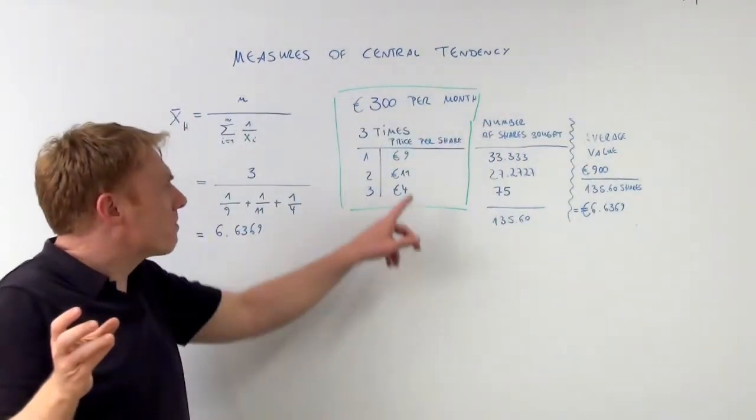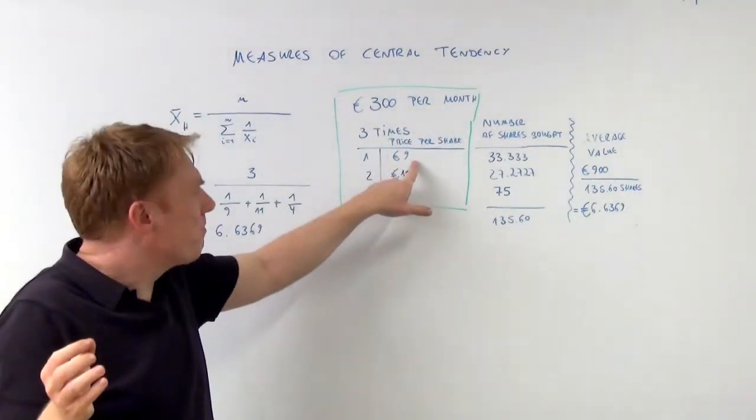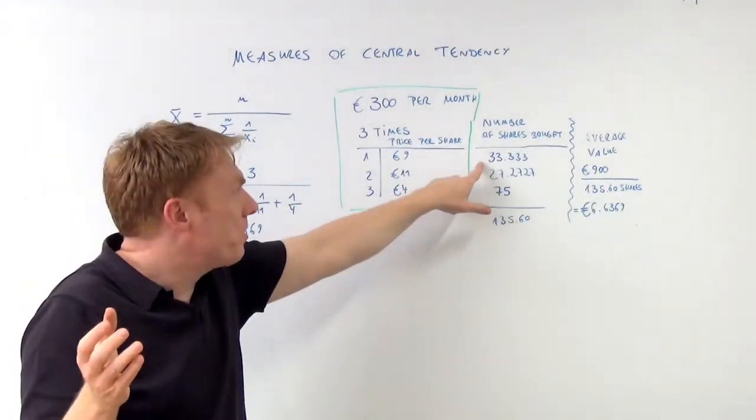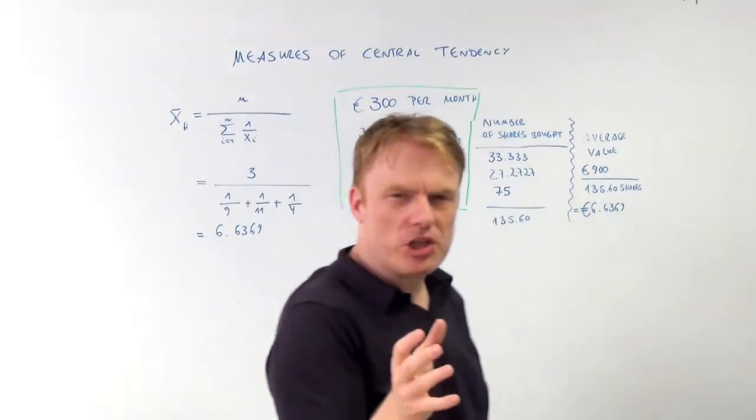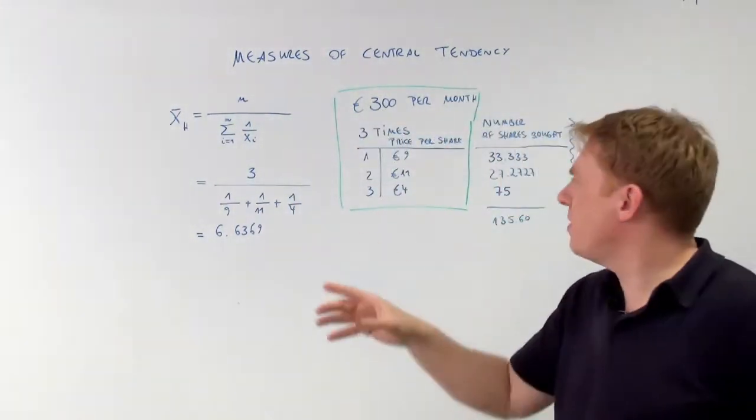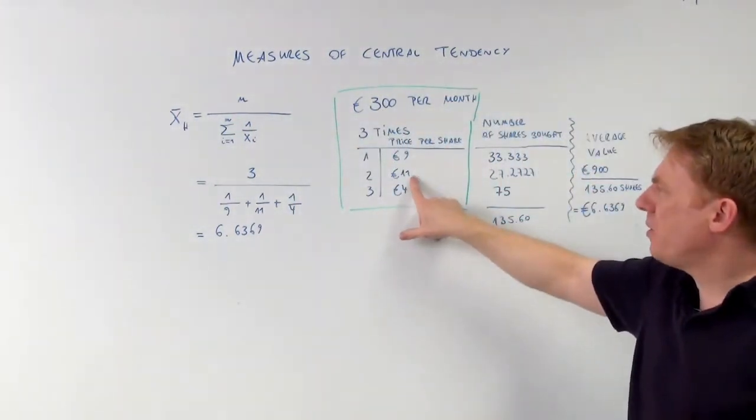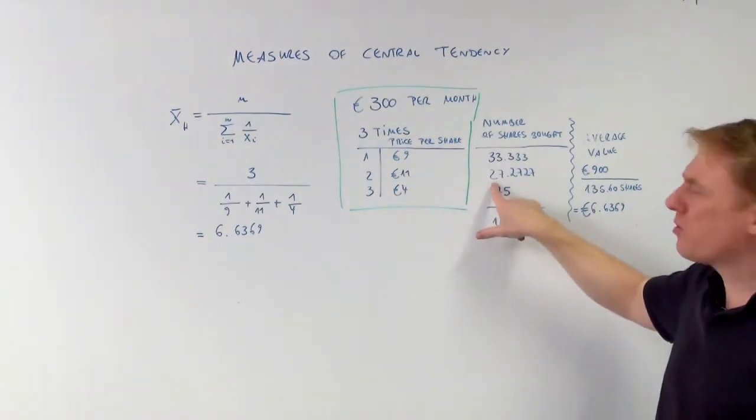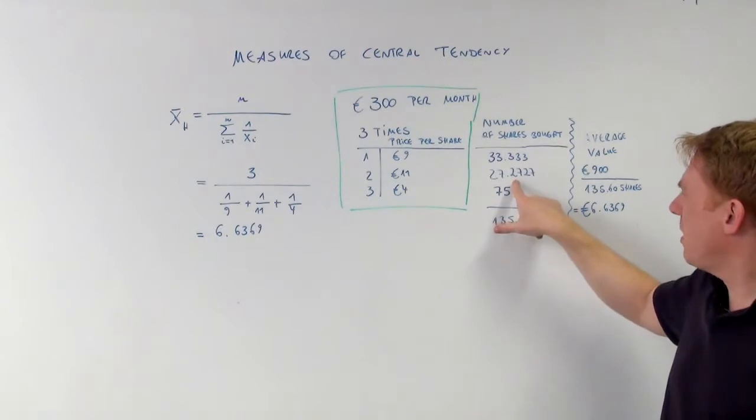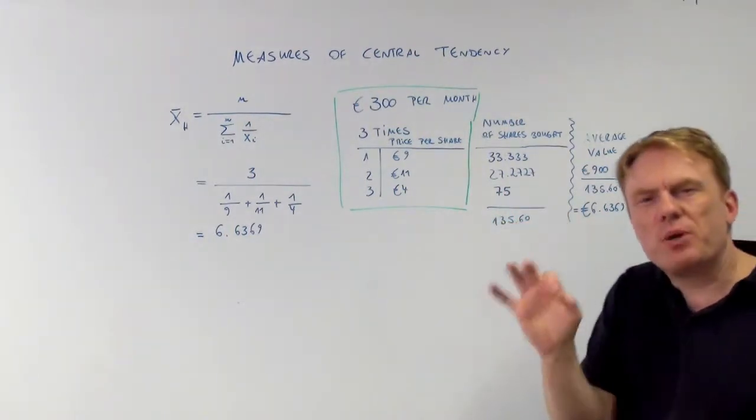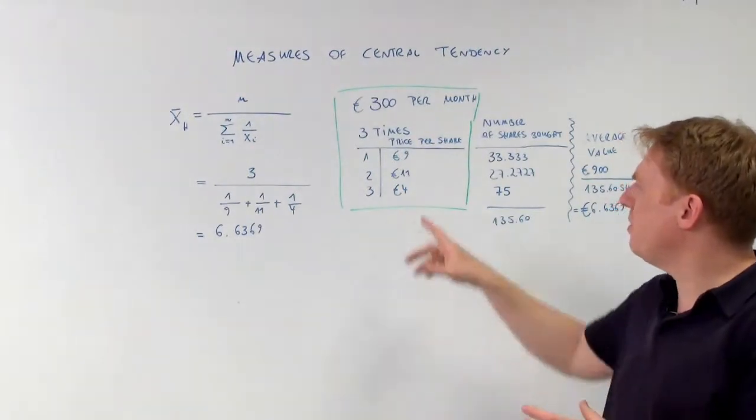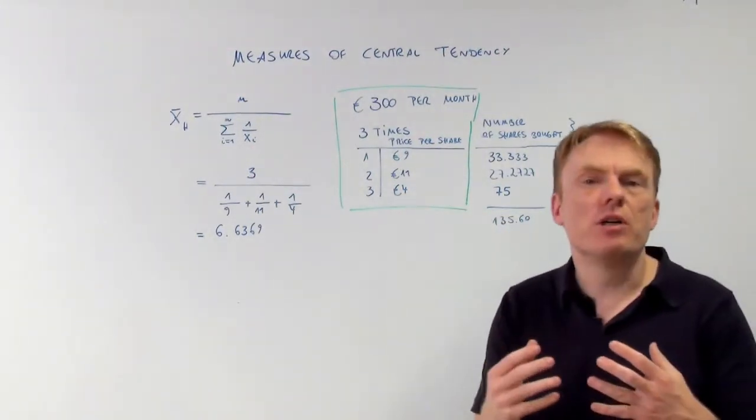Which means in the first month you can buy 33.3 shares. In the second month, buying at 11 euros per share, you get 27 shares and a fraction, 27.27 shares, because you buy a share for 11 euros.